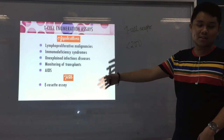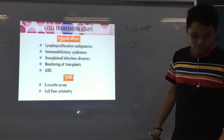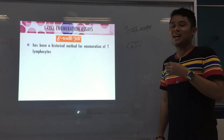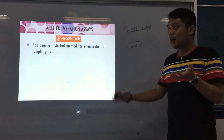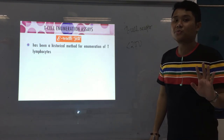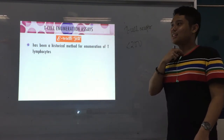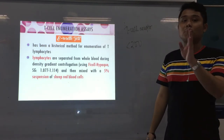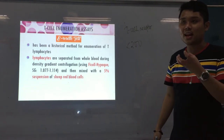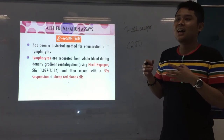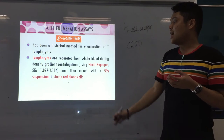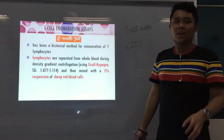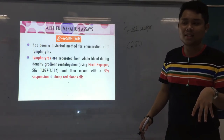We have two types of tests: the E-Rosette assay, which we'll discuss first, and flow cytometry. The E-Rosette test is a historical method of determining or enumerating T-lymphocytes — quite obsolete now as it has been replaced by flow cytometry in most labs. The rationale: lymphocytes are first separated from whole blood by centrifugation using Ficoll-Hypaque, with a specific gravity of 1.077 to 1.114.